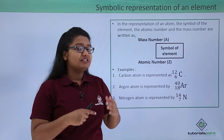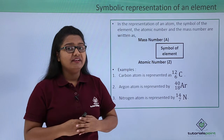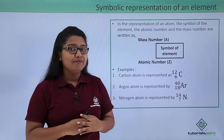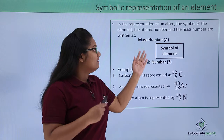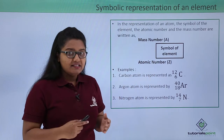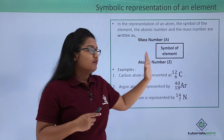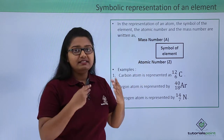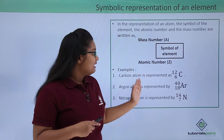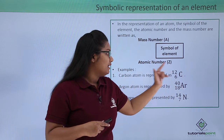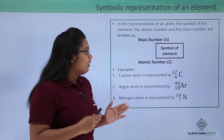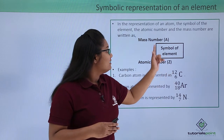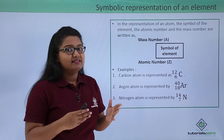We represent an element by its symbol, but very often we may need to represent the atomic number as well as the mass number of that element along with its symbol. The atomic number of the element is written at the bottom left corner of the symbol, whereas the mass number is written at the top left corner. For example, a carbon atom is represented as C with 6 at the bottom left and 12 at the top left, so 6 is the atomic number and 12 is the mass number of carbon.